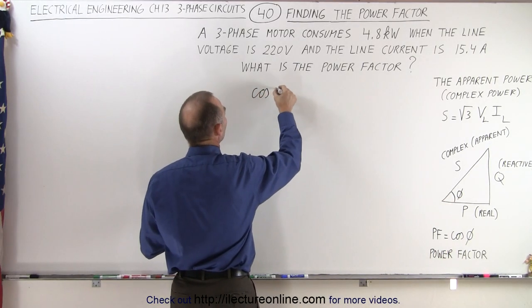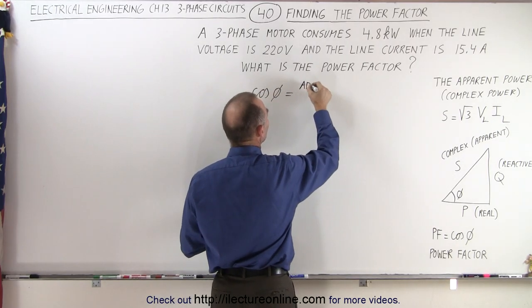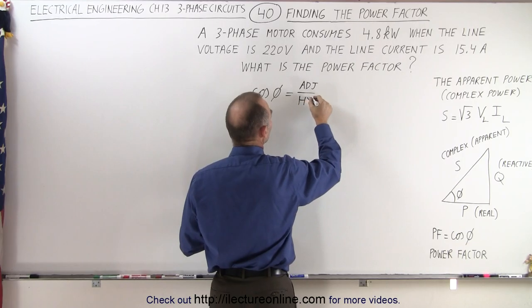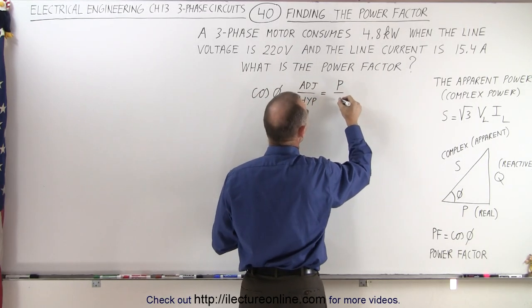The cosine of the phase angle by definition is defined by the adjacent side divided by the hypotenuse. And the adjacent side would be P and the hypotenuse is S.